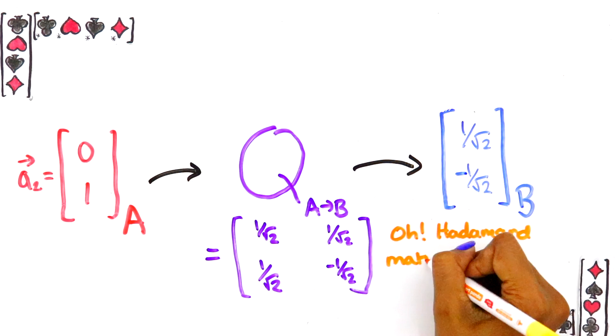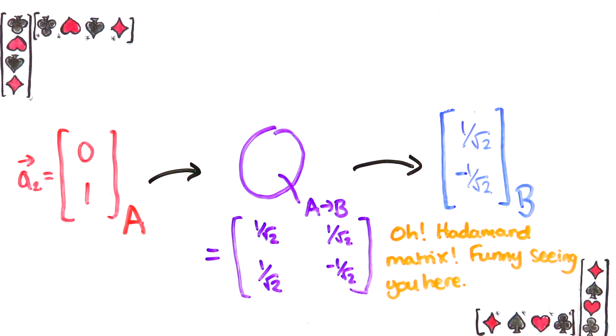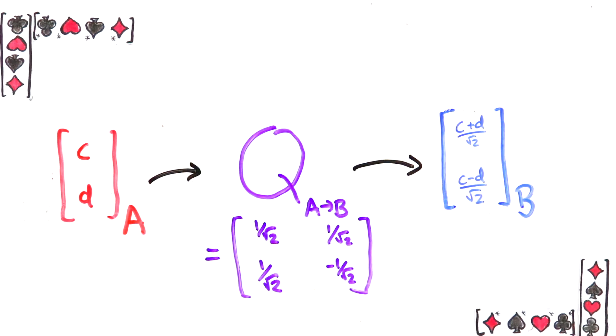This is exactly the matrix we wanted, because if Alice puts in the column CD, it comes out as this column, just as we calculated earlier.